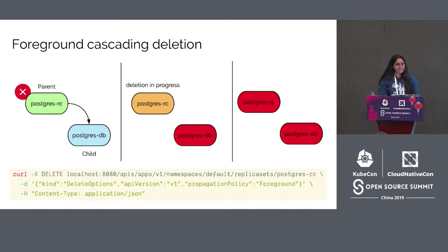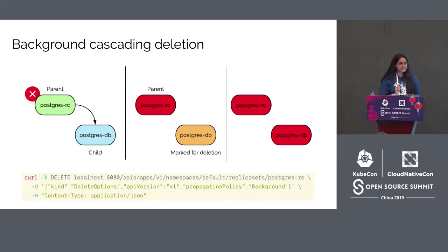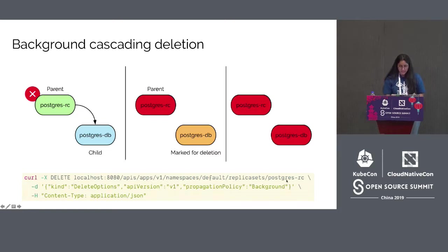A blocking dependent is an object with the blockOwnerDeletion field in owner references set to true. In background cascading deletion, Postgres-RC is deleted with the propagation policy set to background. Postgres-RC, the owner object, is deleted immediately, and the dependent Postgres-DB is marked for deletion, which is deleted later by the garbage collector in the background. With that, we complete the garbage collector controller.